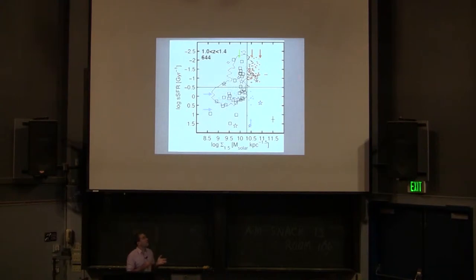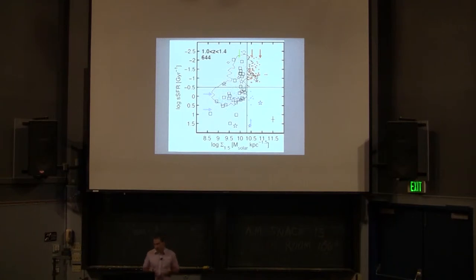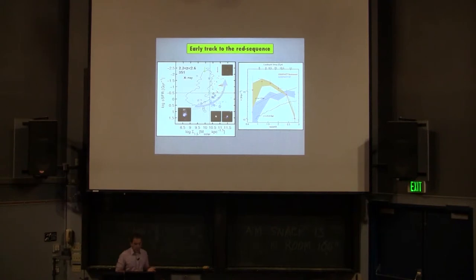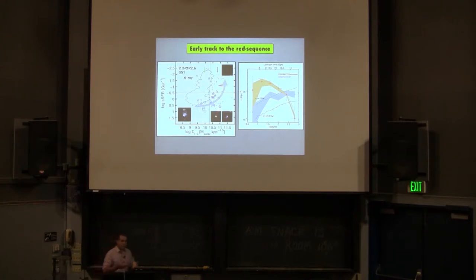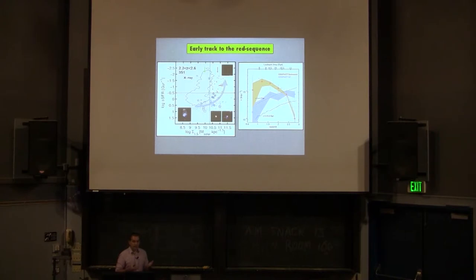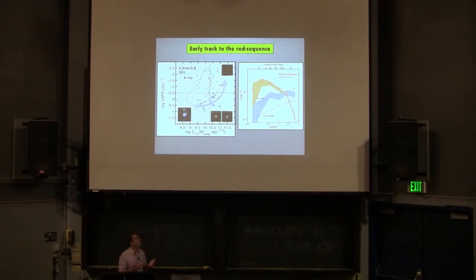A summary of this trend is captured in a cartoon showing galaxies evolving from extended, irregular, clumpy discs, then becoming something small and compact and round — like the quiescent galaxies — but still star-forming. In fact, these galaxies are detected at far-infrared wavelengths with high star formation rates and are among the most star-forming galaxies in the universe at that epoch. They then quench in a short period of time to form the quiescent population.